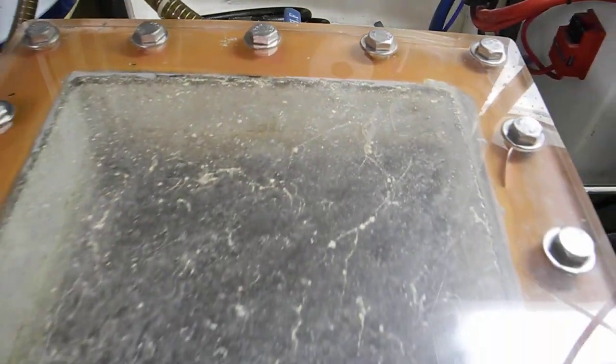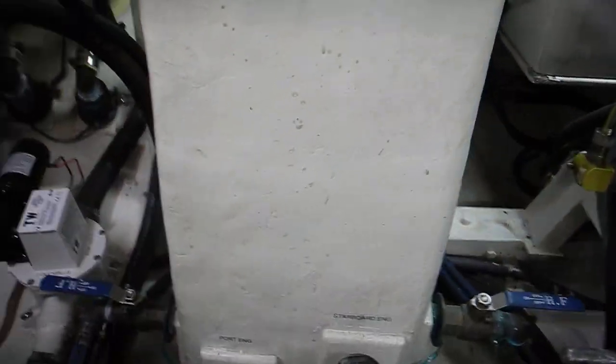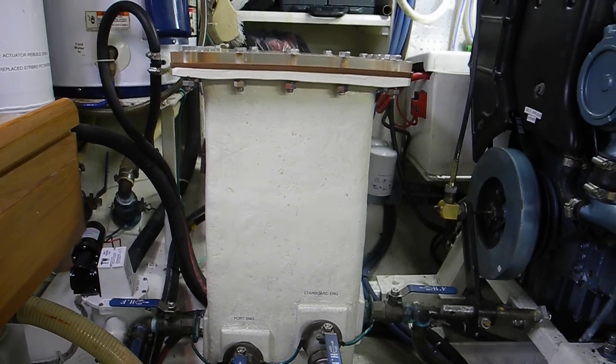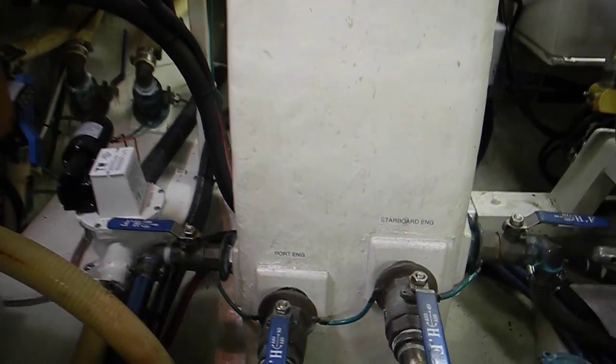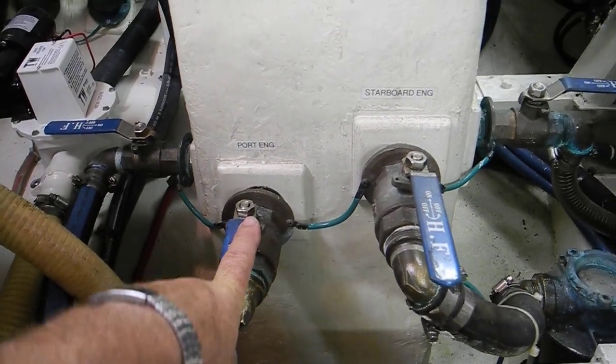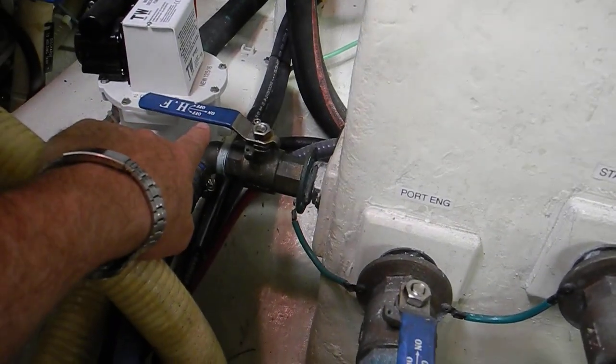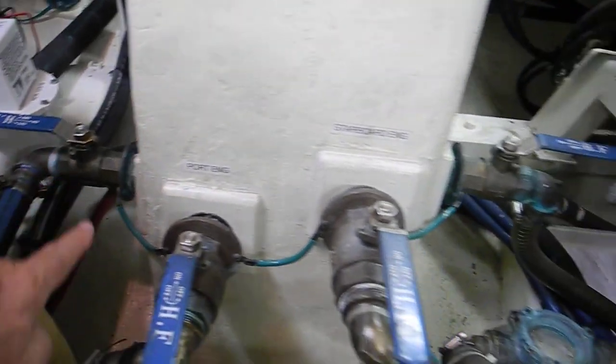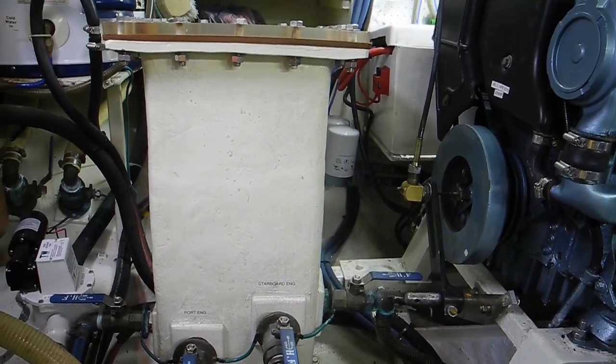This big piece that I was leaning on is called the sea chest. The sea chest means there's only one hole in the bottom of the boat to pick up cooling water. This is the port engine, the starboard engine, the generator engine, and the air conditioning water pump. So all four of these pickups come through this tall sea chest.